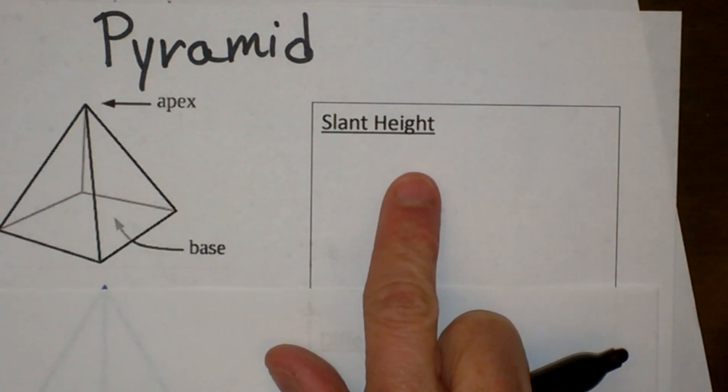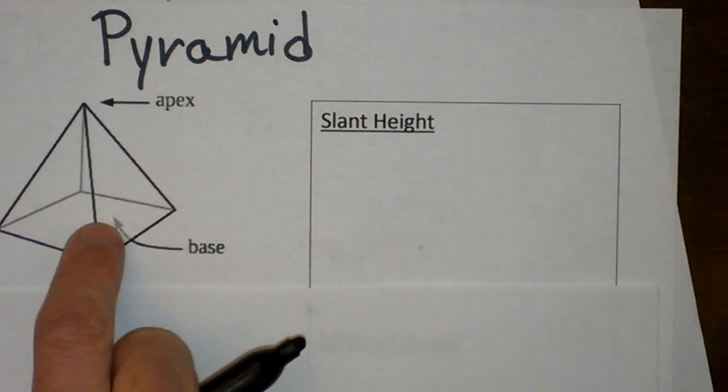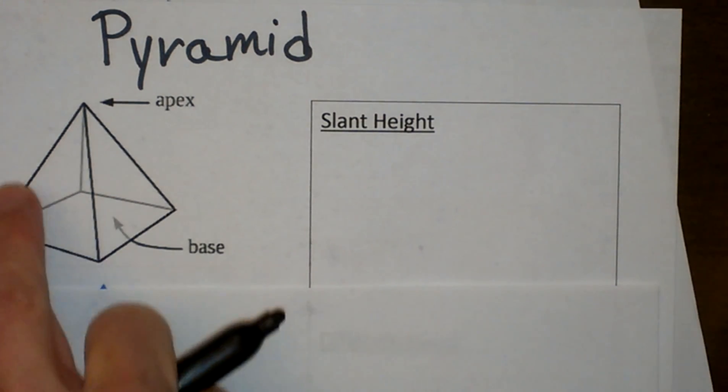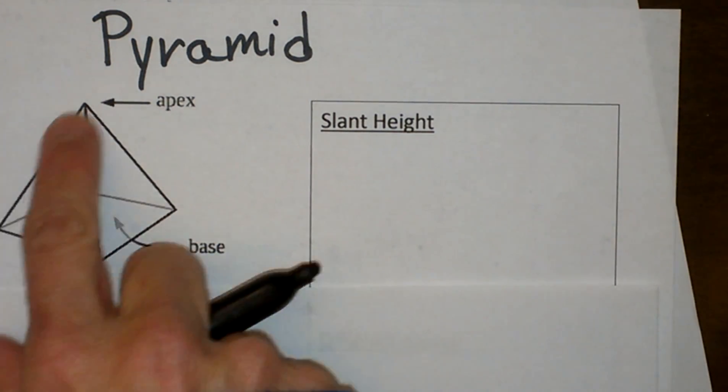So the first thing we are going to do is let's just define what a pyramid is. A pyramid is a three dimensional figure with a base and triangular sides called faces.